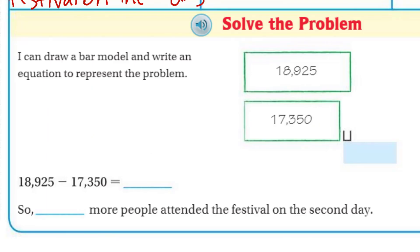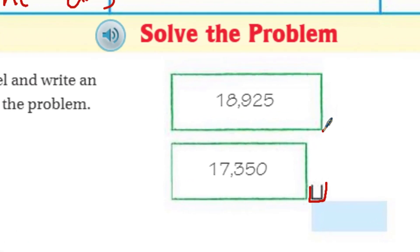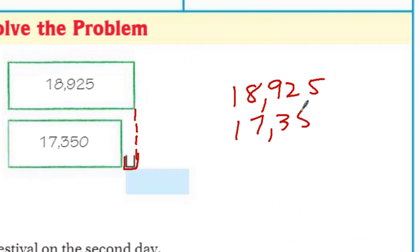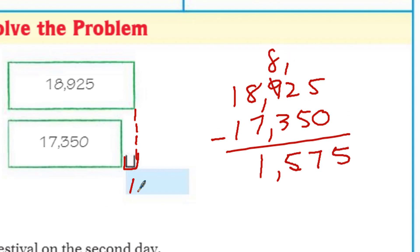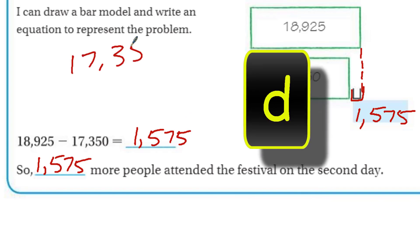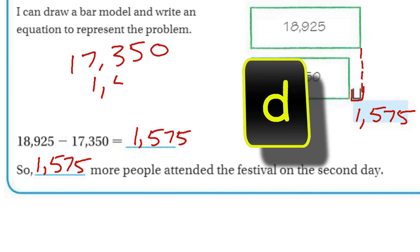Now it says solve the problem. I can draw a bar model and write an equation to represent the problem. The bar model shows one is a little bit larger — that section shows how much more the one is than the other. Let's go ahead and do the standard algorithm. We're going to line up our digits properly to find the difference. I'm going to need to regroup and I'm getting an amount of 1,575. So 1,575 more people attended the festival on the second day. Now I could always double check — that's what I would always do on a test, you guys, and I think you should do the same.